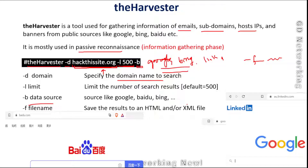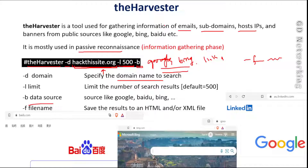There are many sources available, like we also have LinkedIn and Twitter. All these sources can be used to find further information about our target. So to summarize: D is for domain name, L is the limit with a default of 500, and B is the data source — Bing, Google, and more.